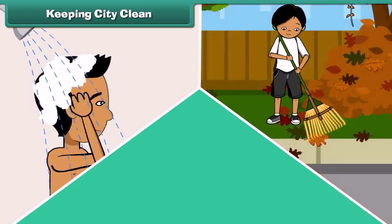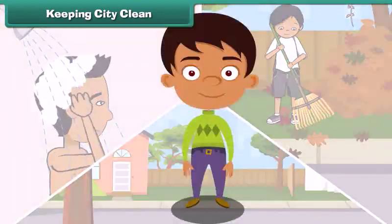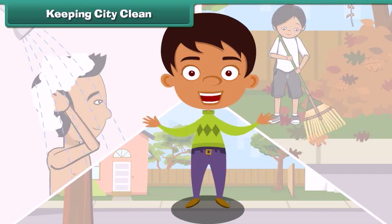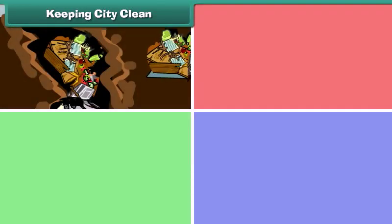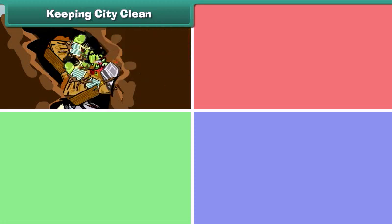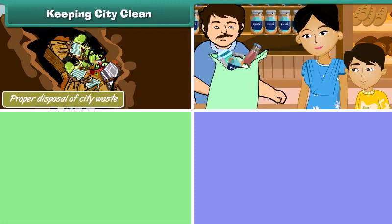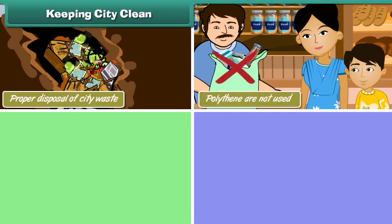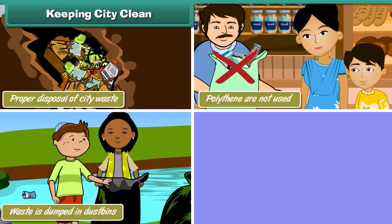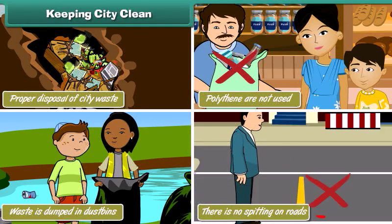Keeping the city clean: It is not enough to maintain personal, neighborhood and community hygiene. It is also our responsibility to keep our city clean. We can do so by ensuring proper disposal of city waste, not using non-biodegradable substances like polythene, dumping waste in dustbins, and not spitting on roads.